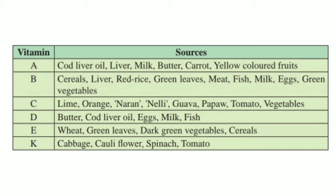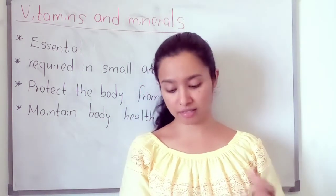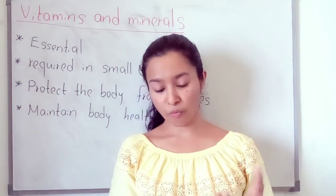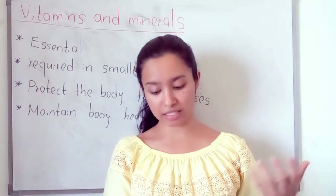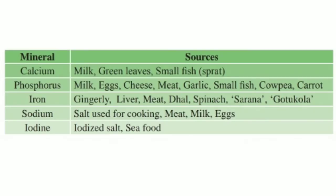Vitamin K is found in cabbage, cauliflower, spinach and tomato. You should know the sources of each vitamin. You can find pictures of these food items and paste them in your writing book. On page number 90 there is a table containing the functions of these vitamins — please read those.